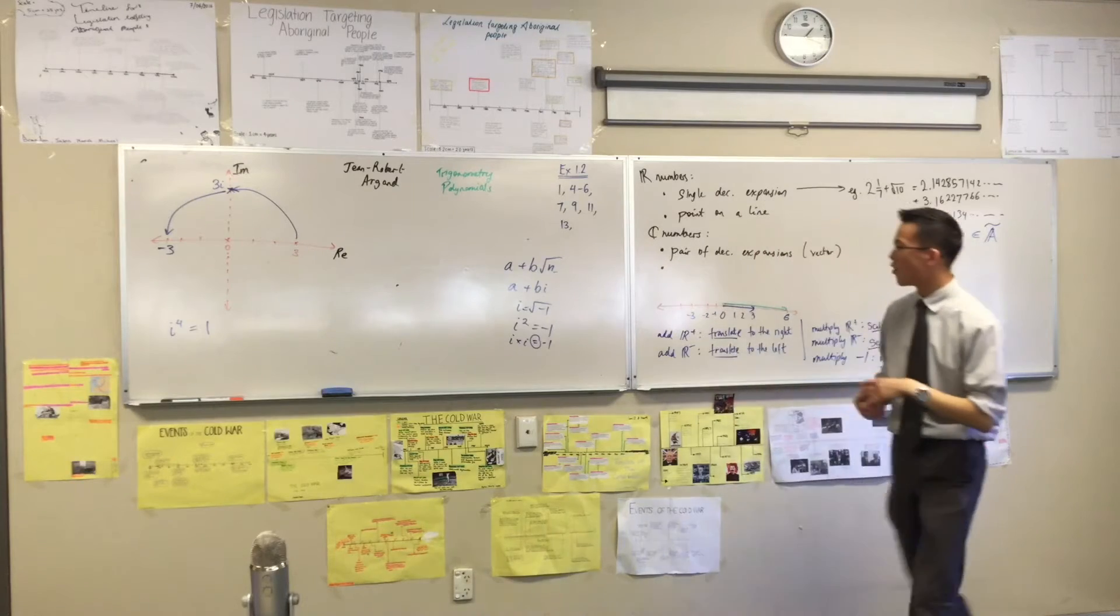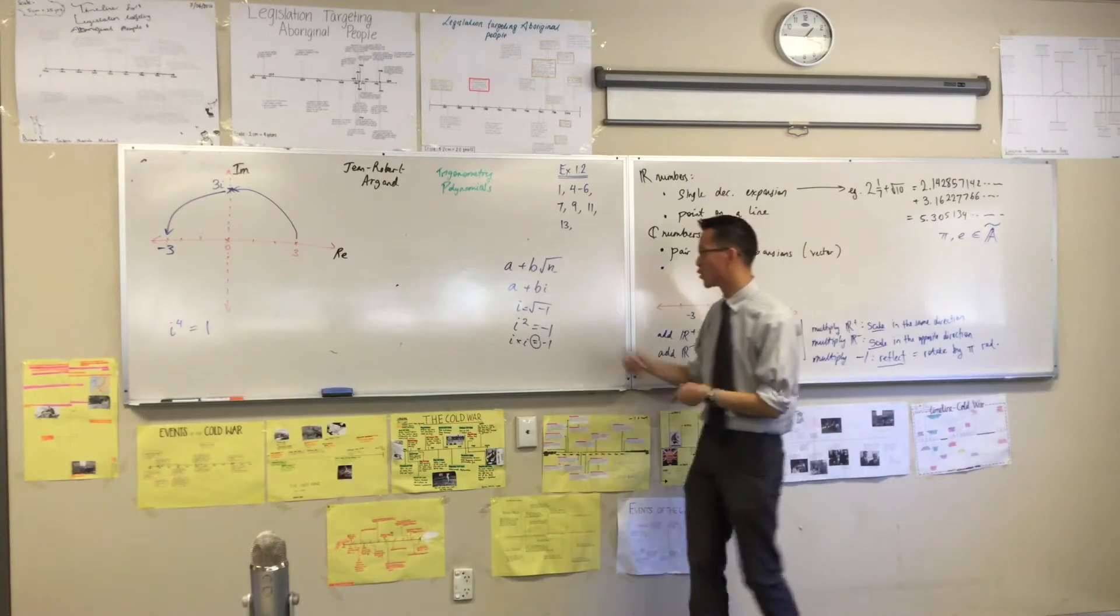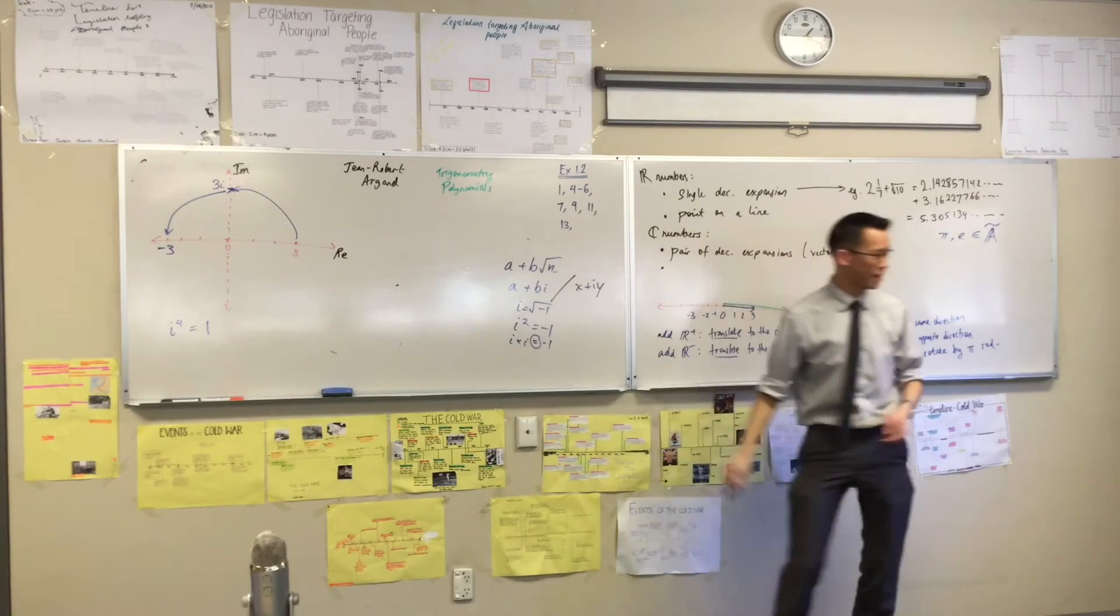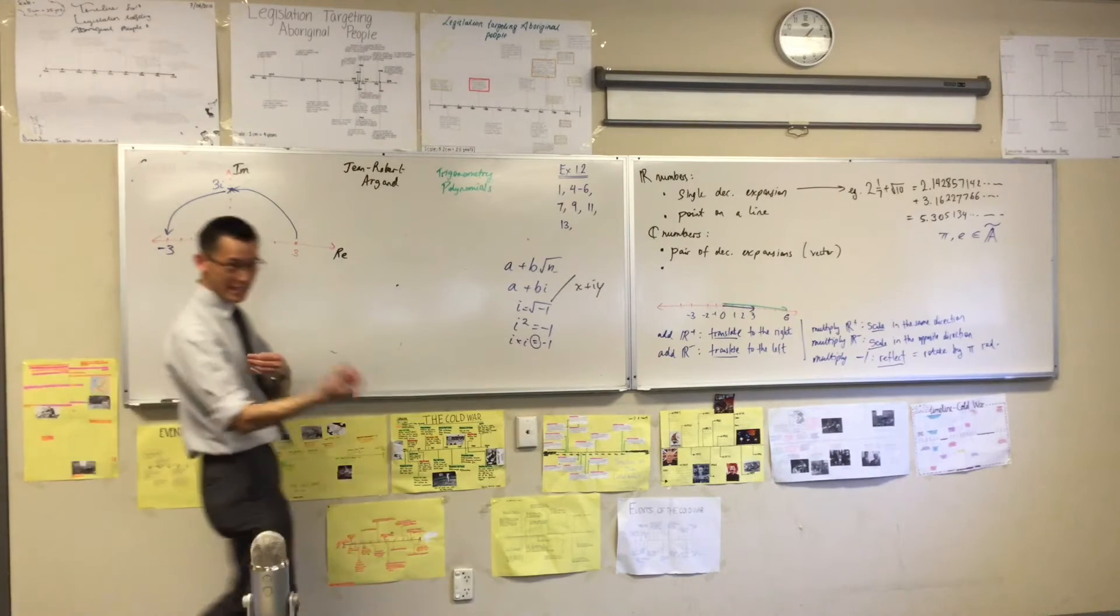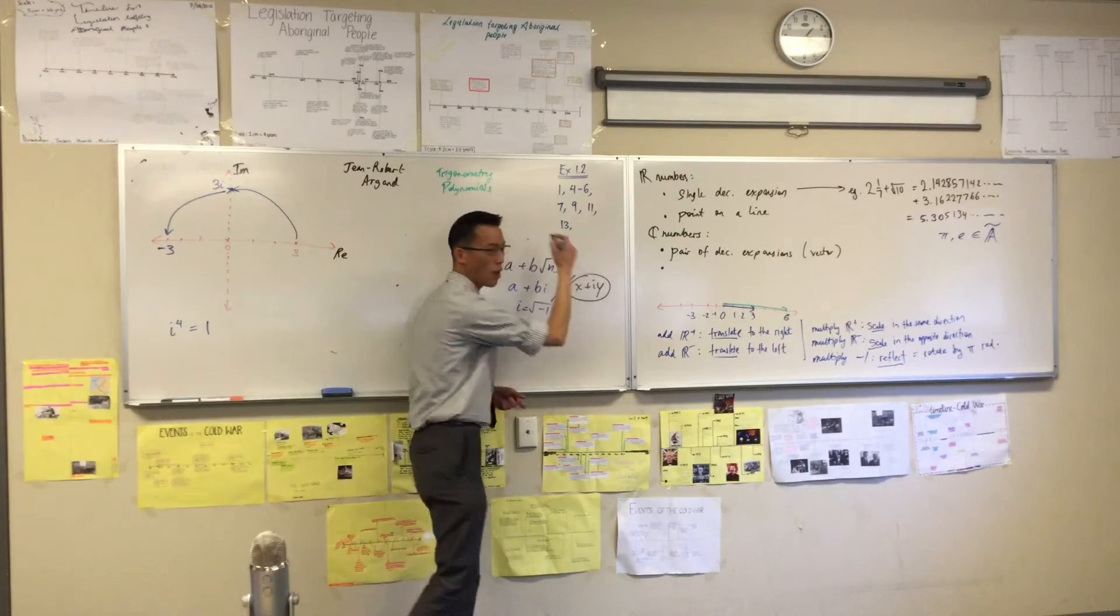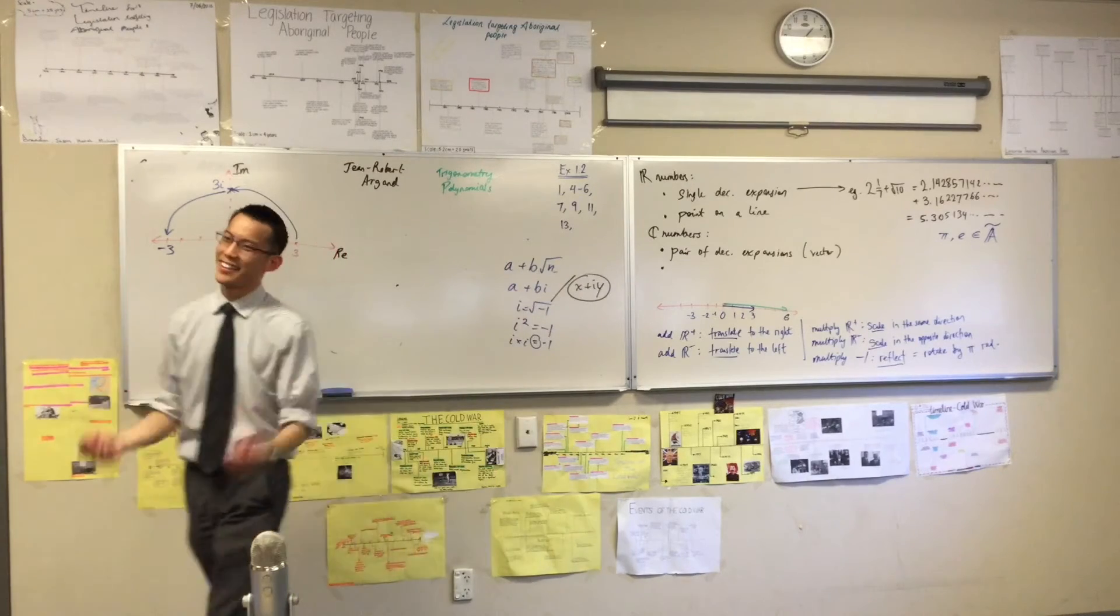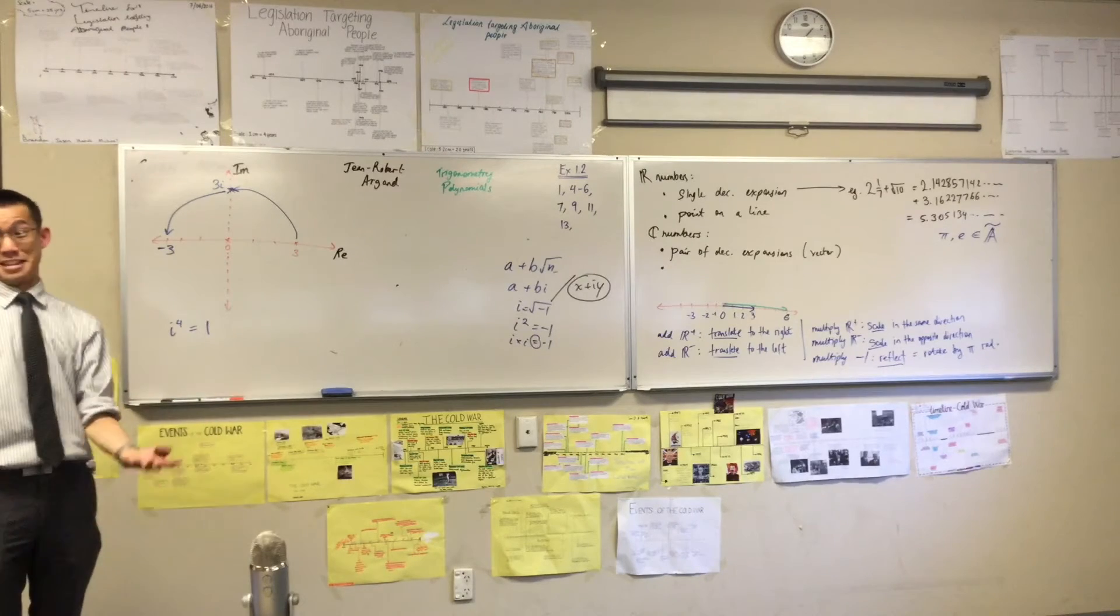Alright, now, remember we said before, you can write a number as a plus bi, but I said you could also write it as x plus iy. So now you can see why it makes sense to use x and y instead of just a and b. Can you imagine some mathematician who's like, what's the first two letters I can think of? a and b.